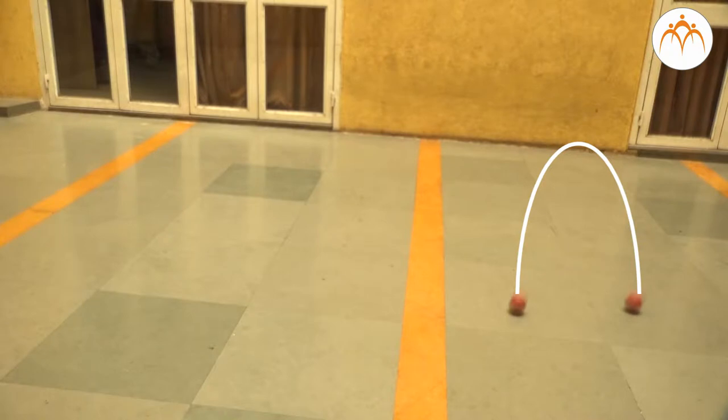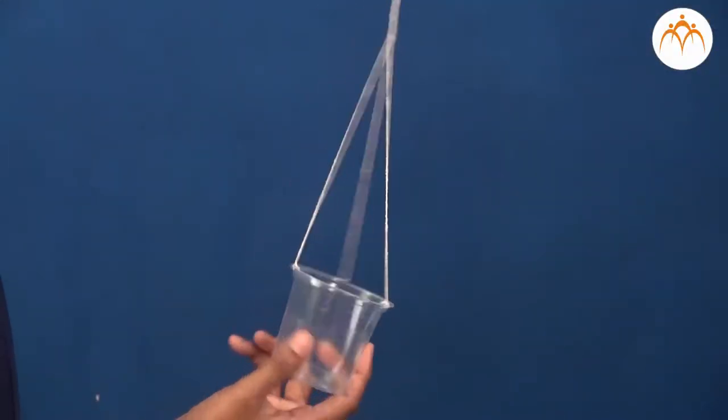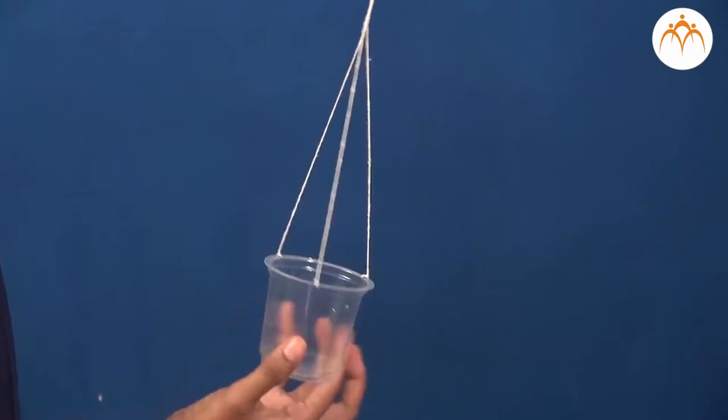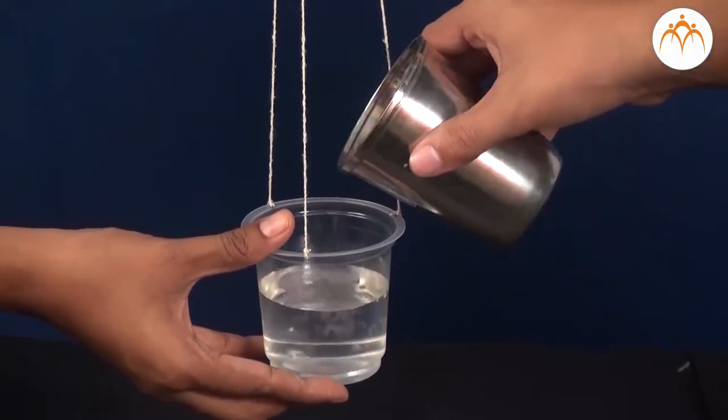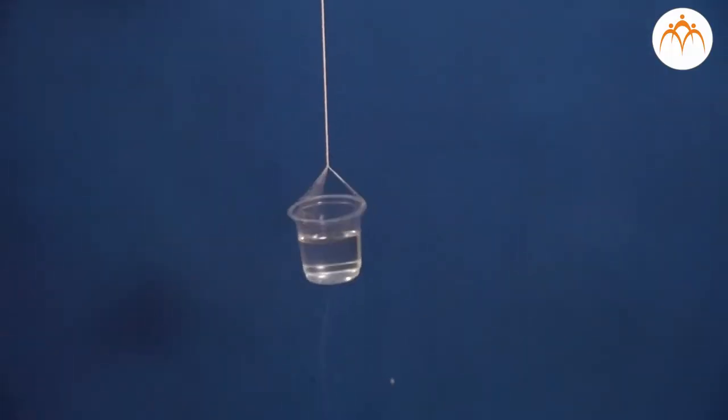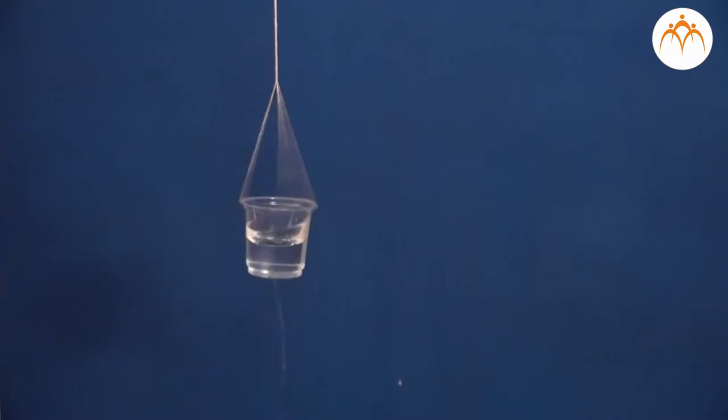So, displacement happens in two ways. If you see, here is a glass of water tied with a twisted string. When the twists become loose, the glass starts rotating along its own axis. Water from the glass seems to move away from the center and upwards, and a depression appears at the center. We call it a vortex.